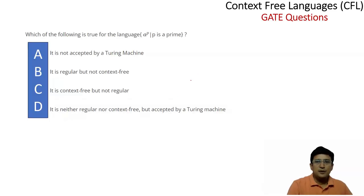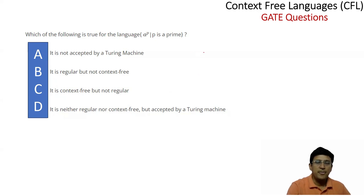Let's take some more questions on the context-free languages which have been asked in the GATE exam. This question asks: which of the following is true for the language a^p where p is a prime number? The language a^p where p is prime is not regular.